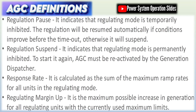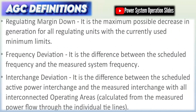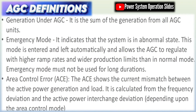The advantages of AGC include improved system reliability, enhanced frequency stability, better inter-area power flow management, efficient economic dispatch of generating units, and reduced need for manual operator intervention. However, disadvantages may include complexity in system design and communication infrastructure, higher costs of implementation, and challenges in integrating AGC with legacy equipment or non-conventional generation sources.